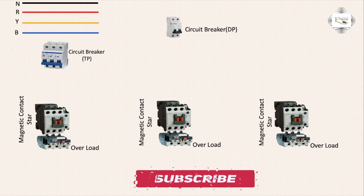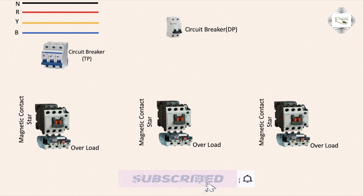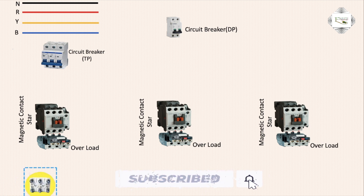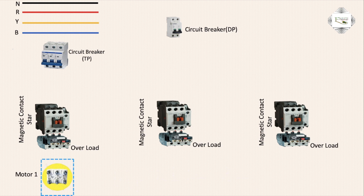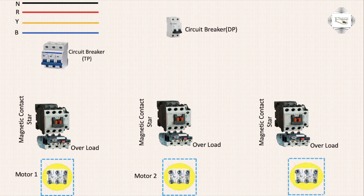The overload protection monitors motor current. Motor terminals are labeled motor one, motor two, and motor three. One DB box controls all three motors in star connection.